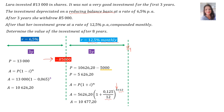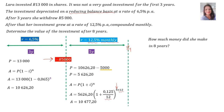Therefore, A is 10,477 Rand and 20 cents. Now the question asks: how much money did she make in 8 years? Remember, the final amount is 10,477 Rand, but she withdrew 5,000 Rand, so you're going to add the 5,000 back, then minus her initial investment. Therefore, the money that she made was 2,477 Rand and 20 cents.